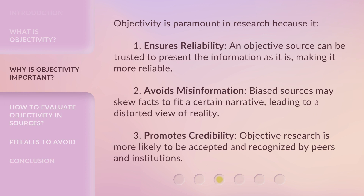Objectivity is paramount in research because it: 1. Ensures reliability — an objective source can be trusted to present the information as it is, making it more reliable. 2. Avoids misinformation — biased sources may skew facts to fit a certain narrative, leading to a distorted view of reality. 3. Promotes credibility — objective research is more likely to be accepted and recognized by peers and institutions.